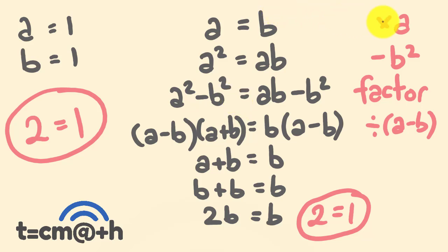At this step we multiply by A, so we didn't divide by 0. At this step we took away B squared. Okay, this one we factorized, so we just rearranged the equation. This one we divided by A take away B, so this one we did divide here, but did we divide by 0?